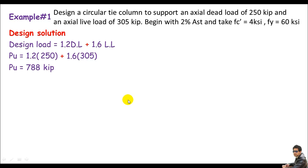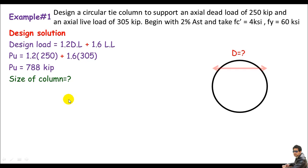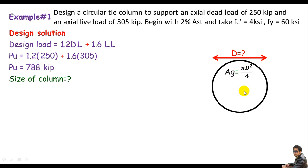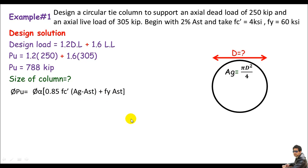The next step is to calculate the size of the column. Since this is a circular tie column, the section is circular and we need the diameter. The gross cross-section area equals π·d²/4 (or π·r²). From the previous lectures, the design load formula is: Pu = φ·α · [0.85·fc′·(Ag − Ast) + fy·Ast]. The gross cross-section area Ag can be found from this equation.